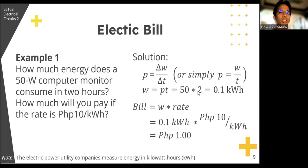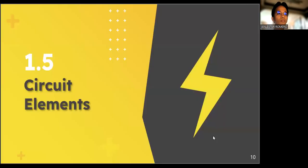So that is 50 watts times two hours. Hence, we have 100 watt hour, or that's equal to 0.1 kilowatt hour. Since our rate is 10 pesos per kilowatt hour, so our total energy consumed is 0.1 kilowatt hour, and our rate is 10 pesos per kilowatt hour, so our bill will be 1 peso. Hence, if you have a computer monitor which has a 50 watt rating, and if the current energy rate is 10 pesos per kilowatt hour, then you are going to pay 1 peso per two hours, or that is 50 cents per hour.